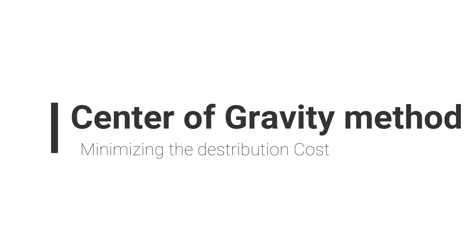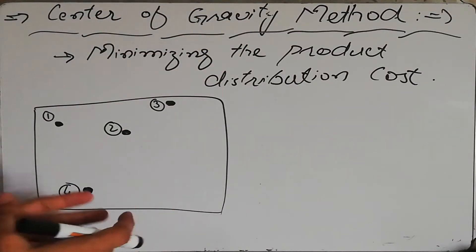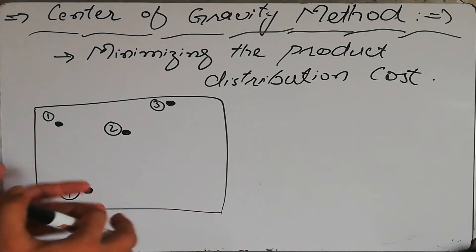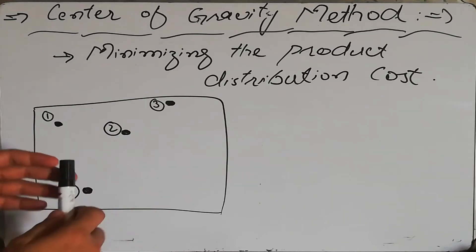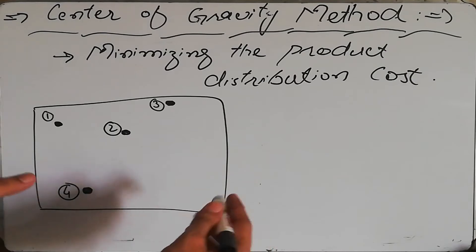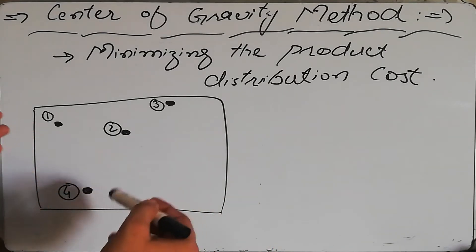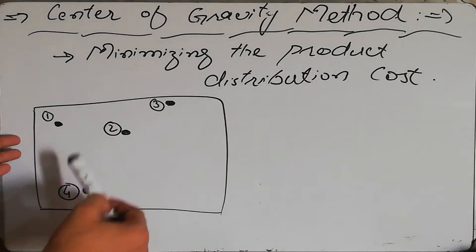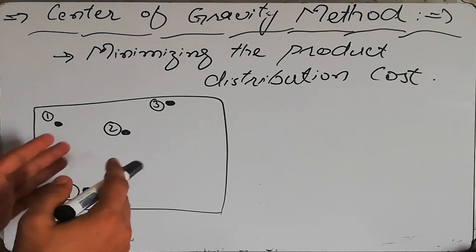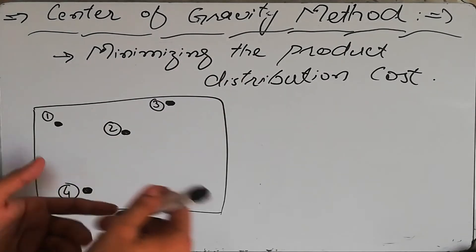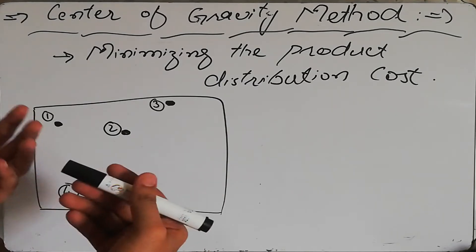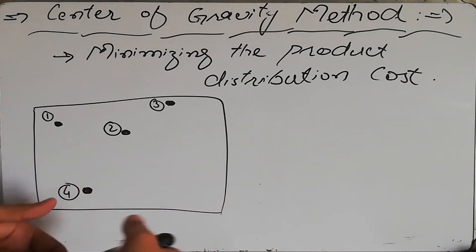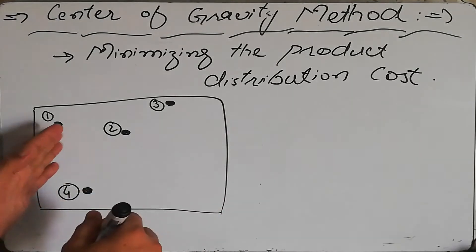Hello and welcome back. This lecture is about the Center of Gravity method — a technique which helps us find the location where the cost of distribution of a product will be minimum. If we have several different markets in different locations, for example markets one, two, three, and four, we want to select a location where the distribution cost would be minimum. All markets will have different capacity, and we will be sending different numbers of units to different markets based on demand.